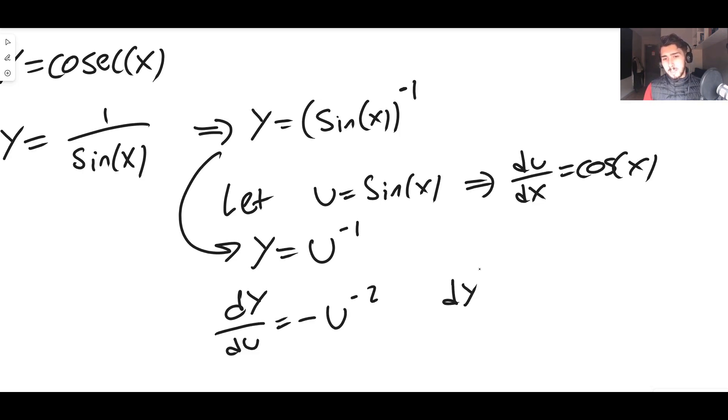To get dy/dx, you just multiply these together because dy/du times du/dx—the du's cancel out, you just get dy/dx. You end up with essentially getting cos(x) multiplied by minus u to the minus 2. And if we turn u back into its definition, we said u was sin(x).